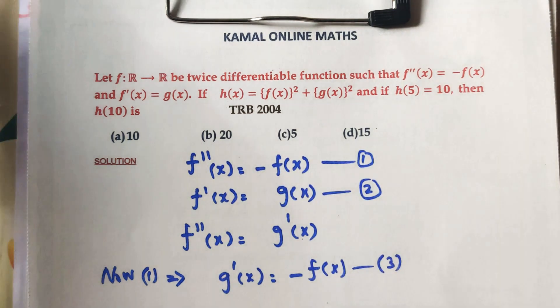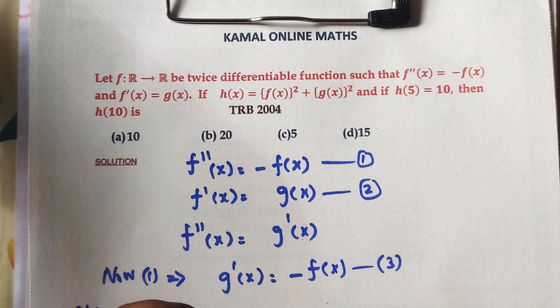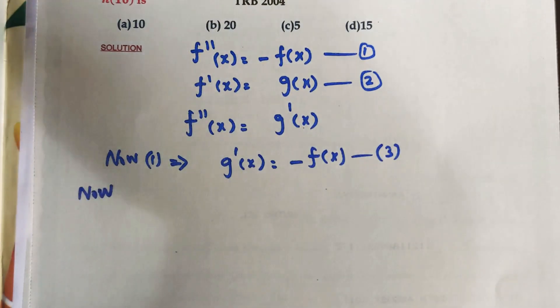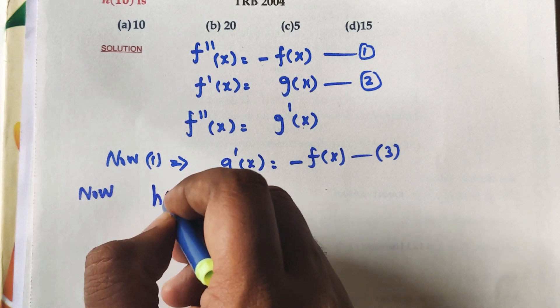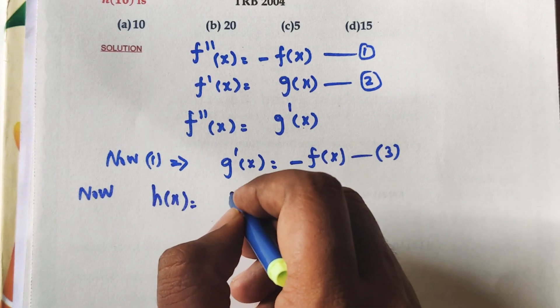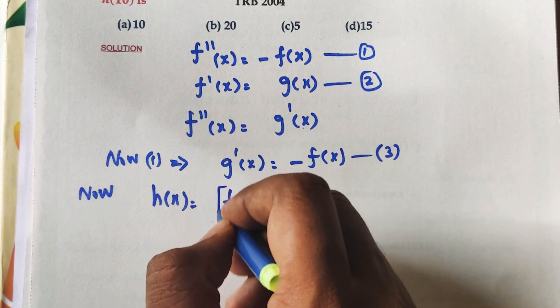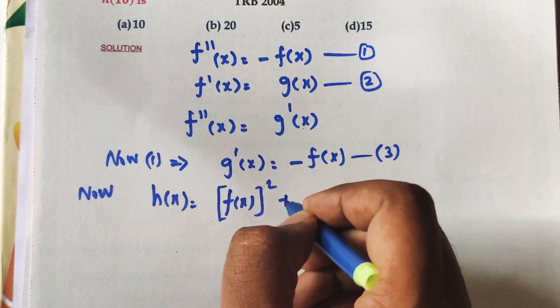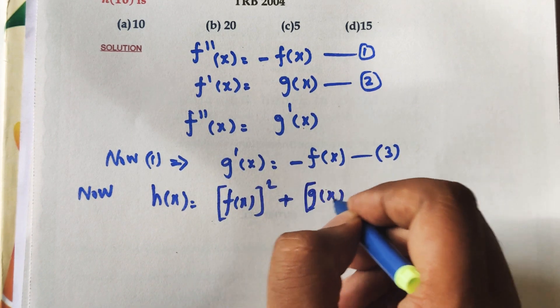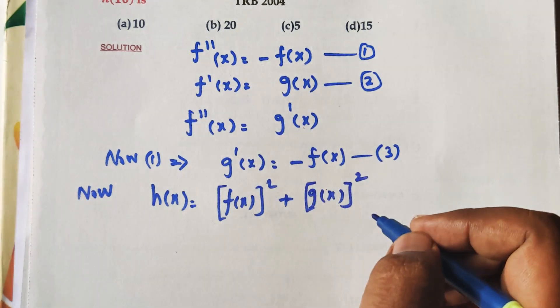Now H of X equals F of X whole square plus G of X whole square.